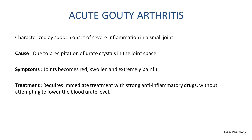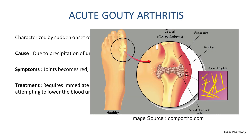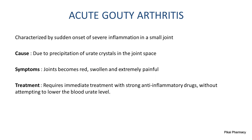Acute gout is characterized by sudden onset of severe inflammation in a small joint, caused by precipitation of uric crystals in the joint space between two bones. The deposition of uric crystals causes pain and severe inflammation. As symptoms, the joints become red and swollen with extreme pain. The most common treatment is to administer strong anti-inflammatory drugs.